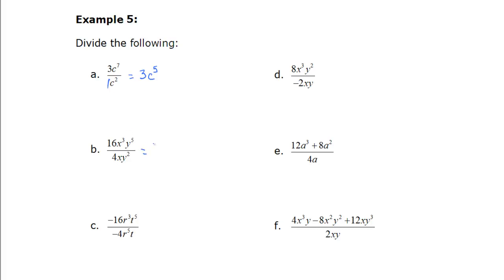In b, 16 divided by 4 is 4. x cubed in the numerator, x to the power of 1 in the denominator. 3 minus 1 is 2. So x to the 2. And y to the 5 in the top, y squared in the bottom. So that's y to the 3. 5 minus 2.